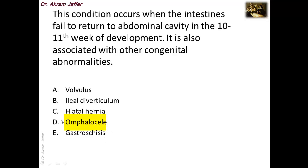The answer is omphalocele. Gastroschisis will be discussed shortly. Congenital hiatal hernia results from shortening of the esophagus — the esophagus failed to elongate enough. Ileal diverticulum is the remnant of the vitelline intestinal duct and will also be discussed shortly. Volvulus might take place later, but the primary condition here is omphalocele, where there is failure of reduction of the physiological hernia.